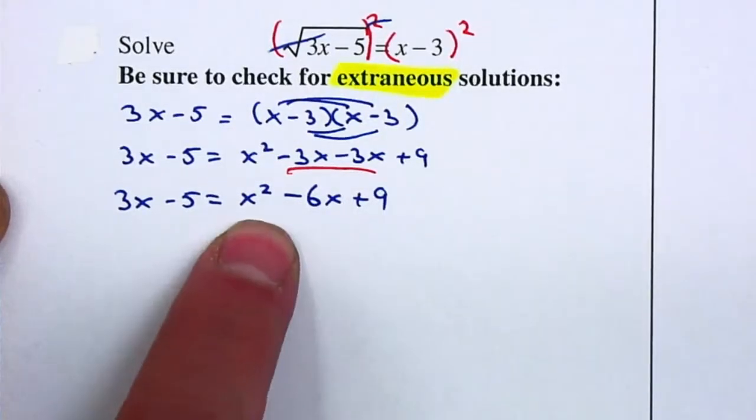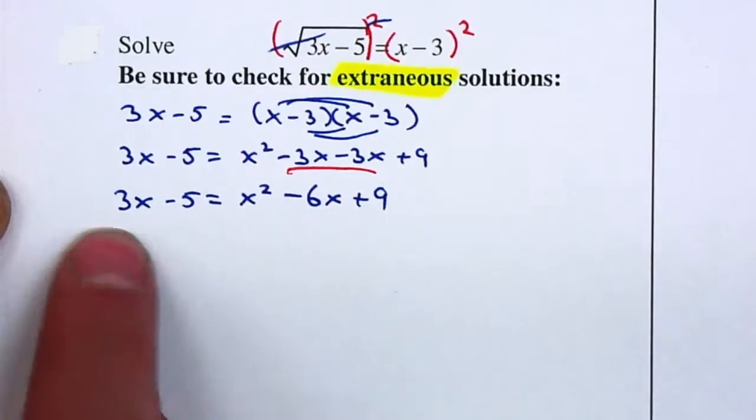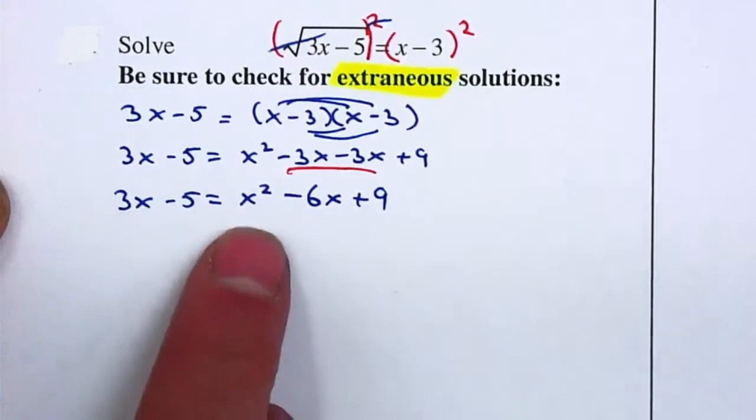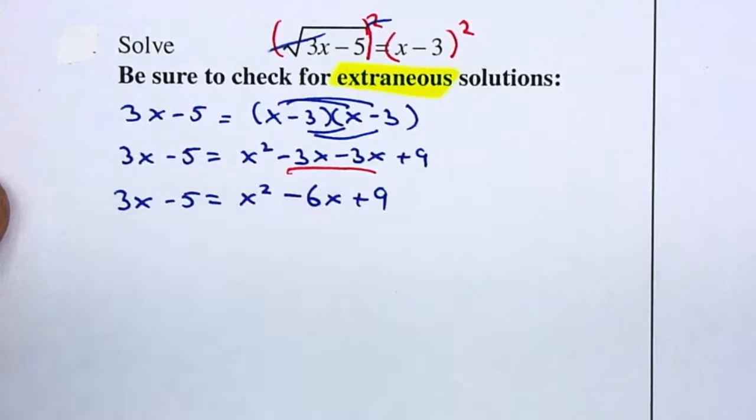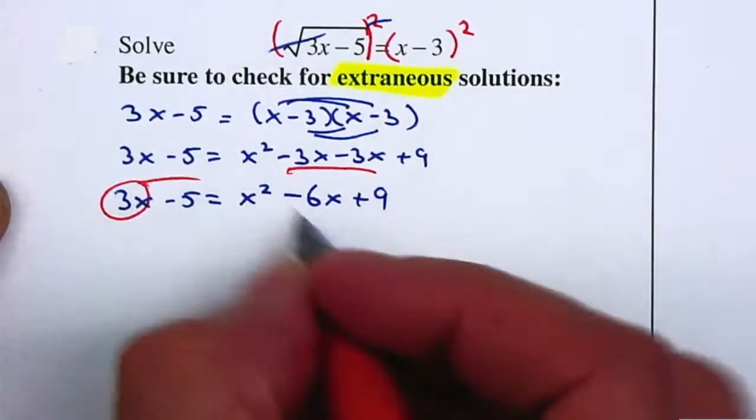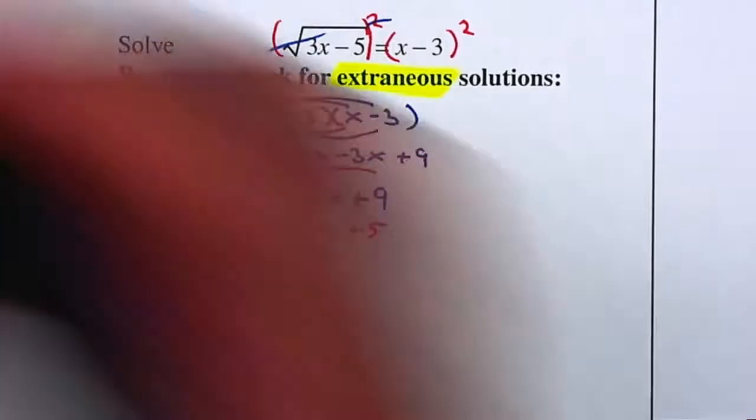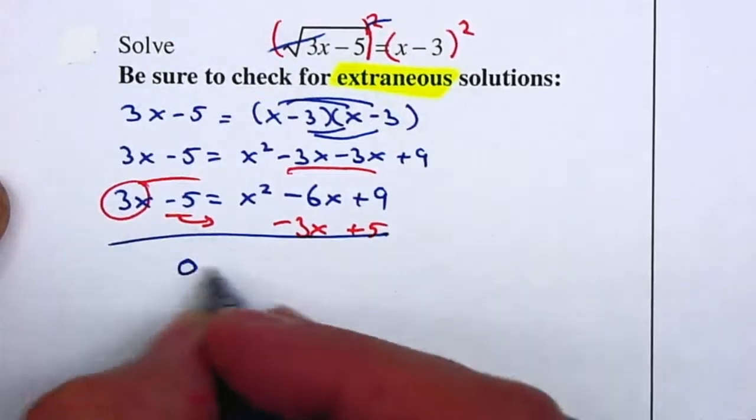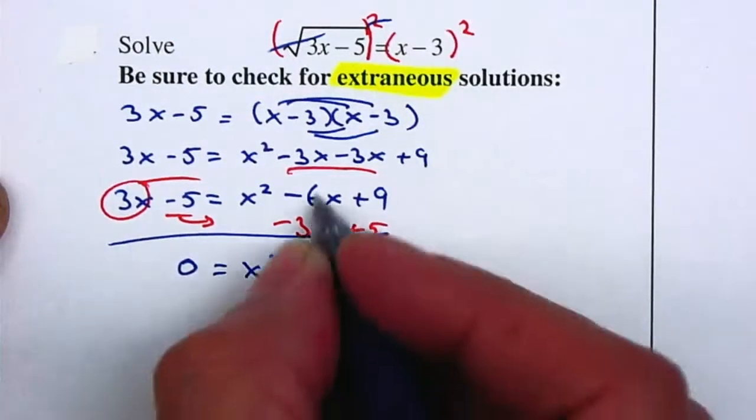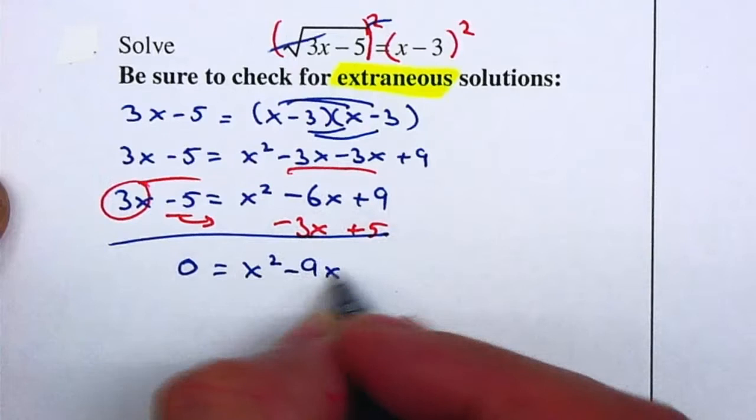And now I have a quadratic equation. So I want to make it equal to 0. I can move everything to the left or everything to the right. Since I want the x squared to be positive, I'm going to move my 3x to the right. It becomes a negative 3x. And my 5 to the right becomes a positive 5. That gives me a negative 9x and that gives me a positive 14.